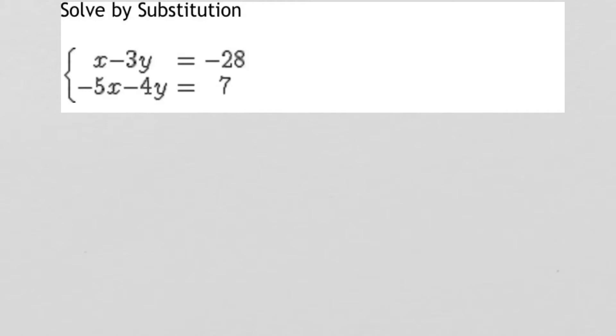To solve this system using substitution, we first look for an equation that has a variable with a coefficient of 1. Notice that the first equation fits this bill. The x variable has a coefficient of 1, and so we're going to choose this equation to start with.